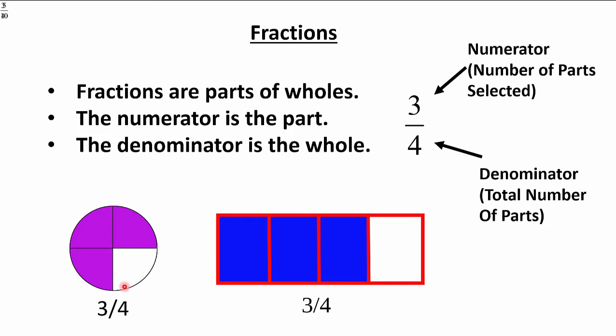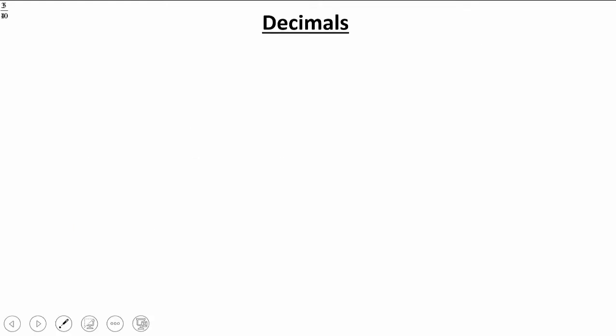You can show three-fourths as a circle or as a rectangle — it doesn't matter how it looks. Just shade three out of four sections in.